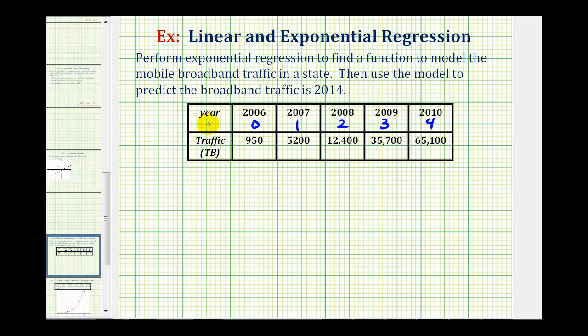So these inputs represent the number of years after 2006, which we'll let equal t. The outputs of the function values will be the amount of traffic in terabytes.